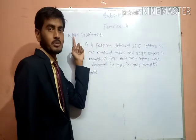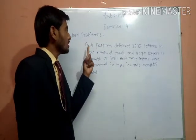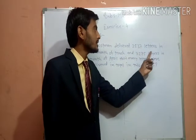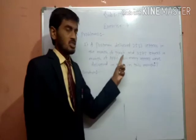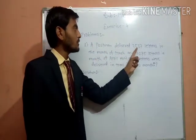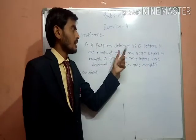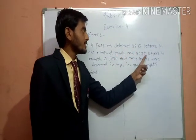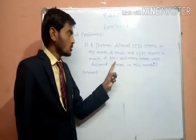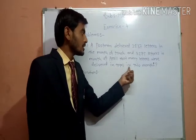Word problems of addition. Our first problem is: a postman delivered 2,537 letters in the month of March and 3,275 letters in the month of April. How many letters were delivered in total in 2 months?